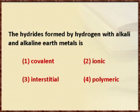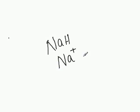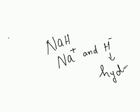Metals have the tendency to lose electrons, so they can form only ionic types of hydrides, not covalent. If you take sodium hydride, sodium has a positive valency. Splitting it gives Na⁺ and H⁻. Hydrogen possessing the negative charge is what makes it a hydride. Therefore, the answer is option 2, which is ionic.